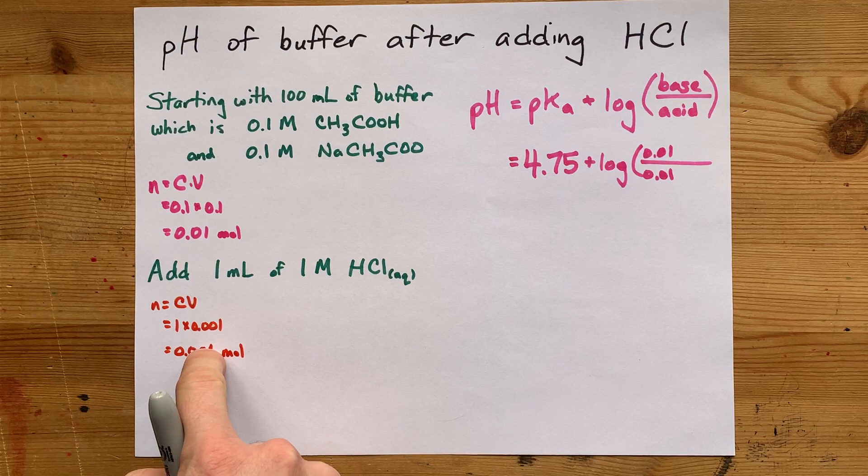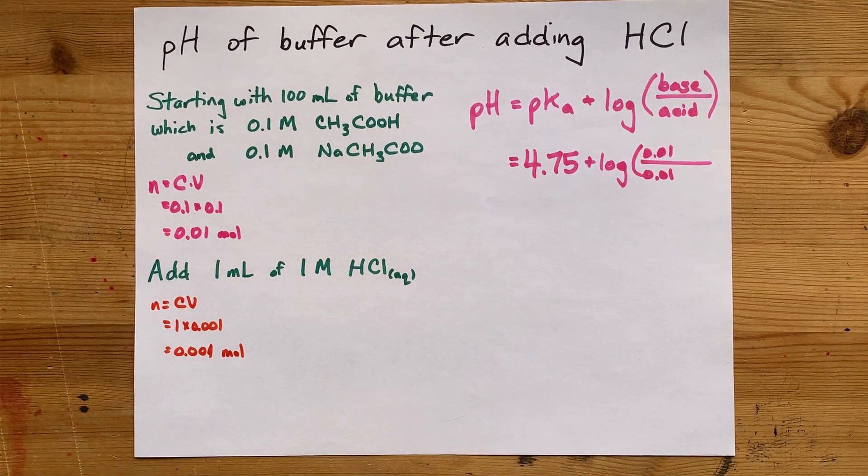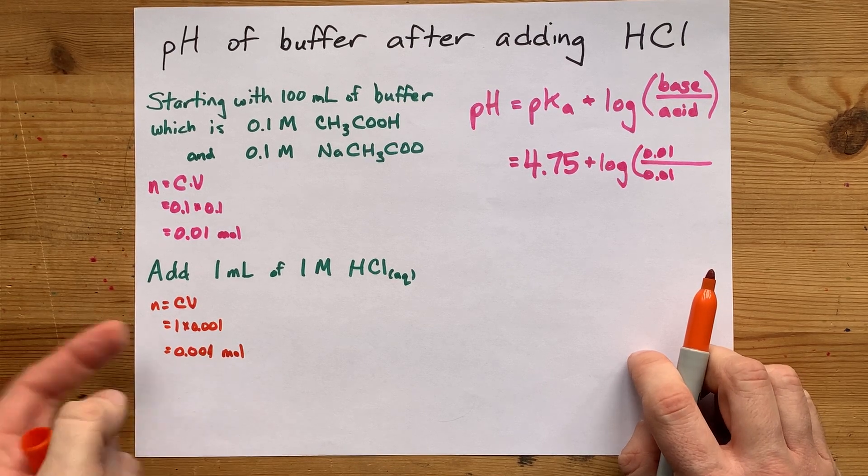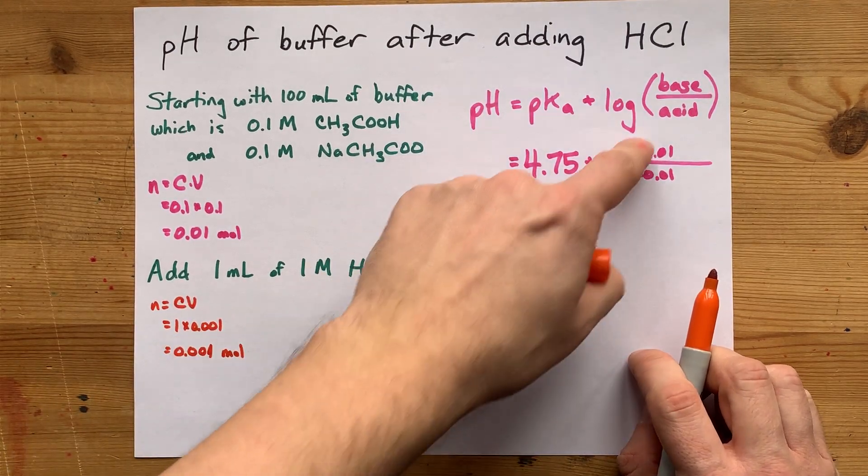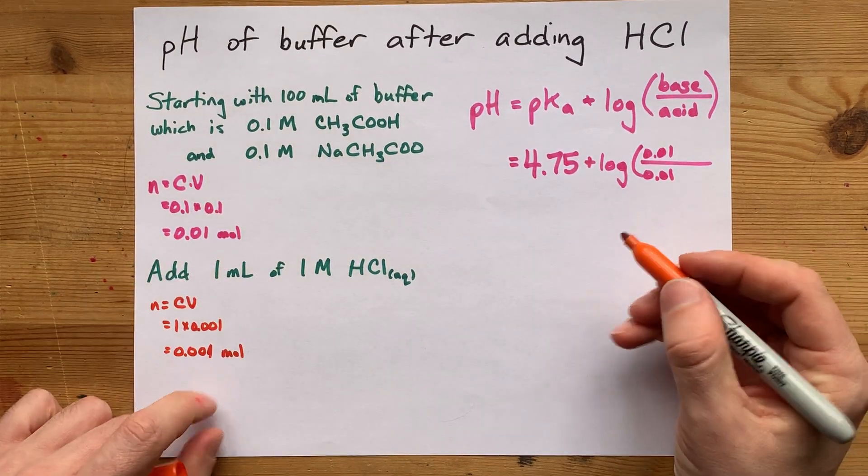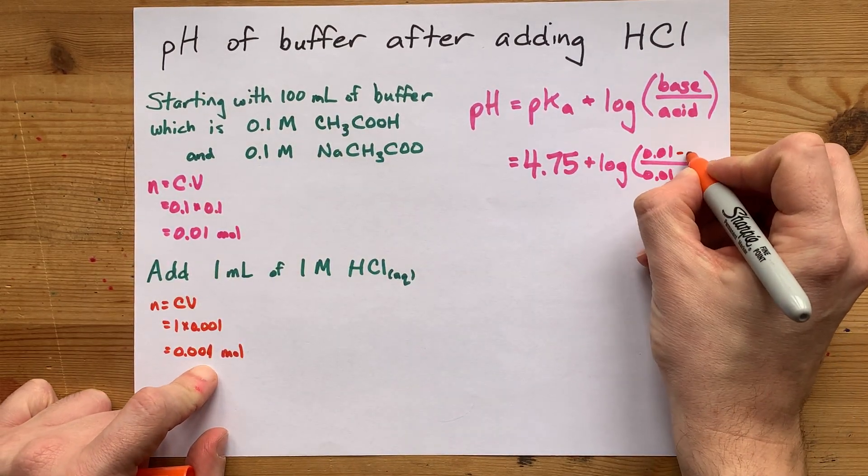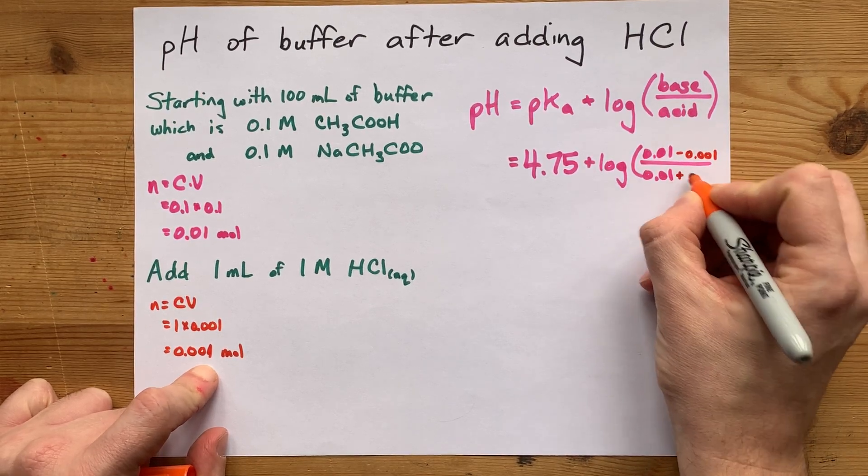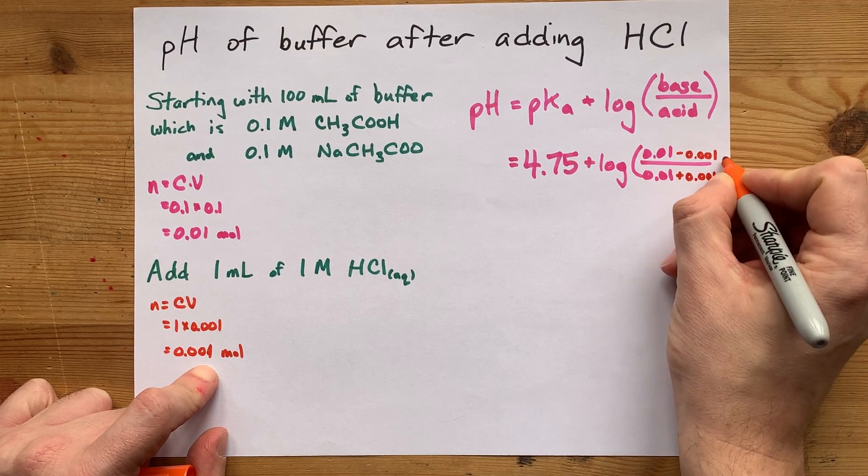You are going to need the number of moles for this equation, and that's because this is the number of moles of acid that we are adding. What is the effect of that on the acid-base equilibrium here? Well, that is going to take away from some of the base and it is going to contribute the same amount to the amount of acid.